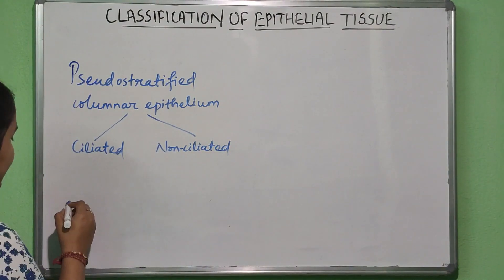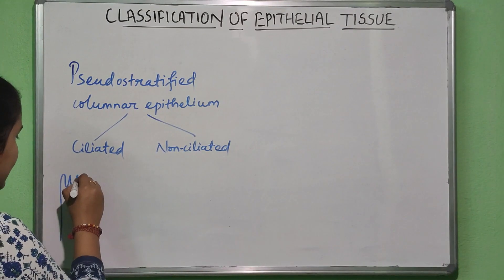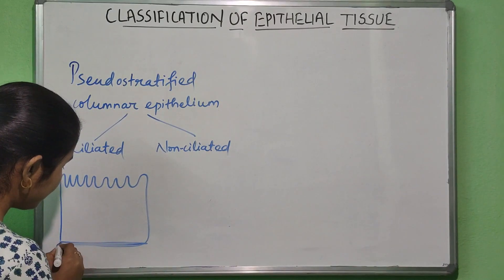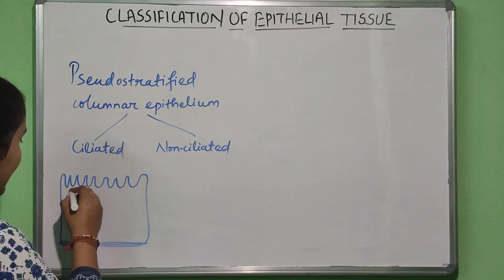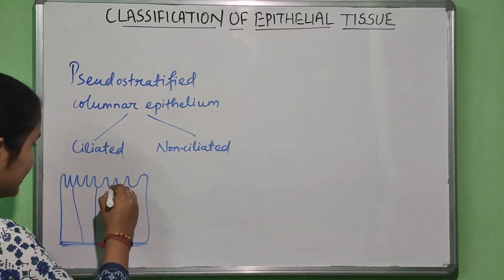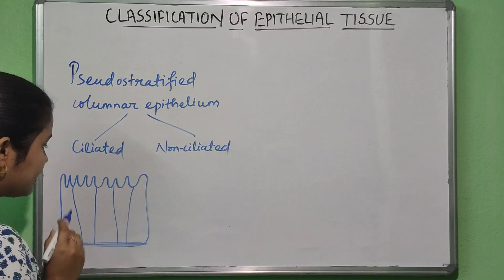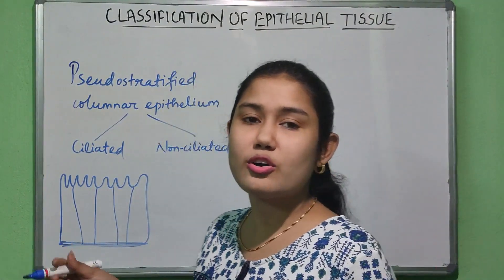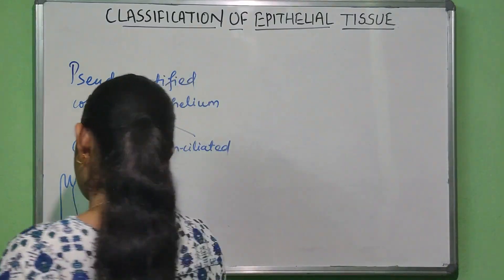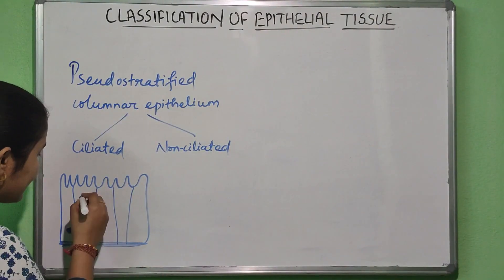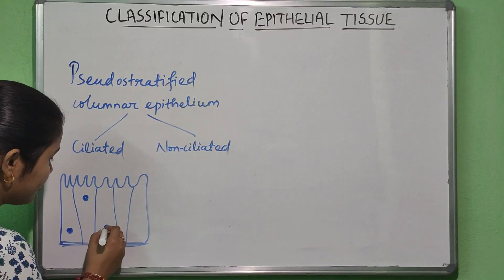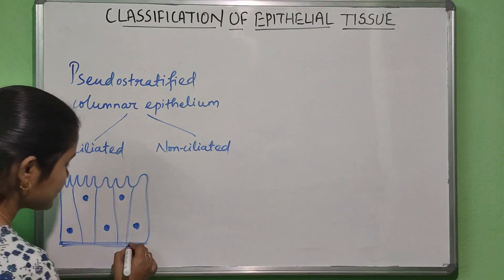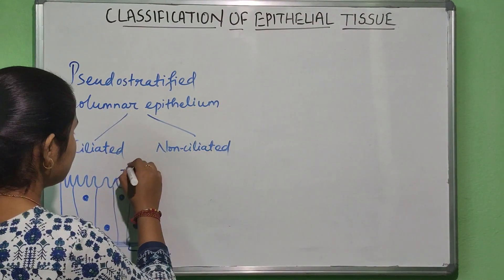In ciliated epithelium, the cilia is present at the apical surface. There is a basement membrane, and the cells are arranged in a single layer, but they appear to be arranged in many layers. This is because not all cells reach the apical surface and the nuclei are not at the same level — the nuclei are at different levels.